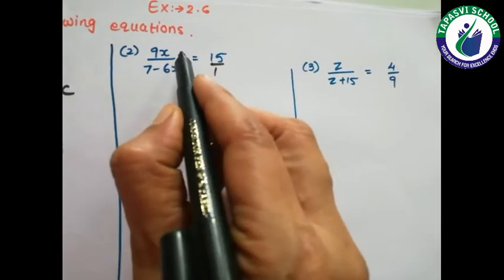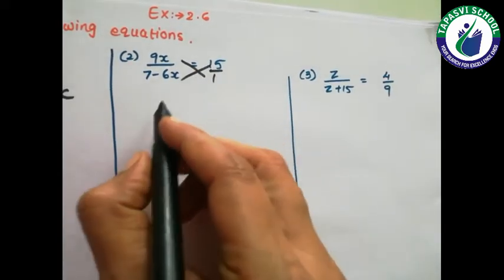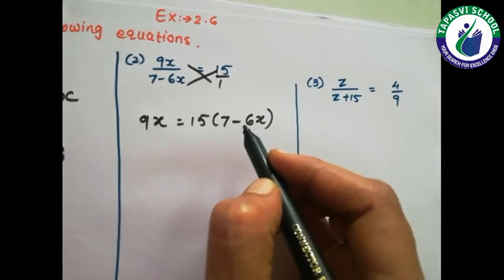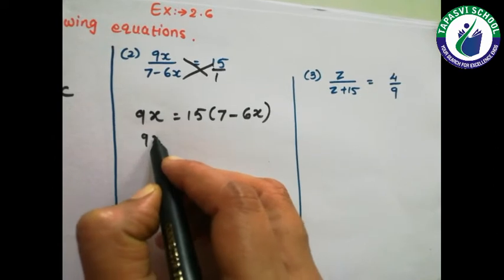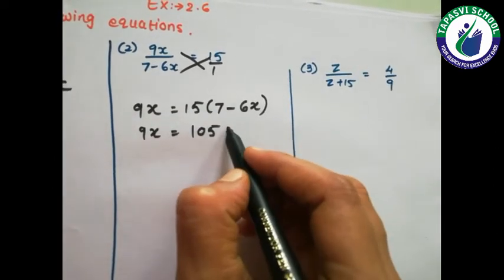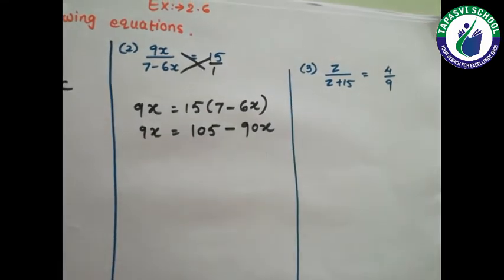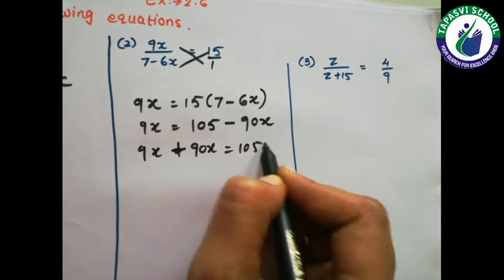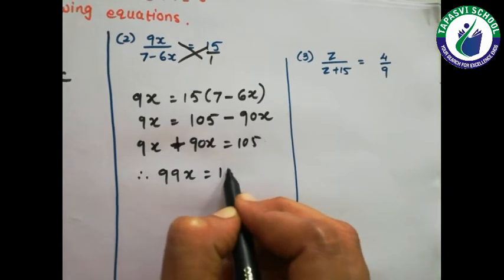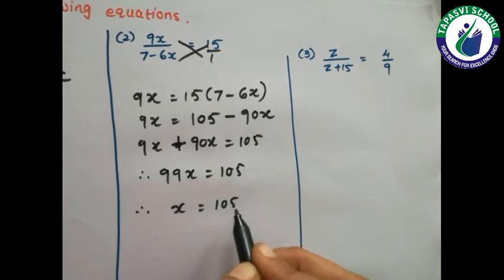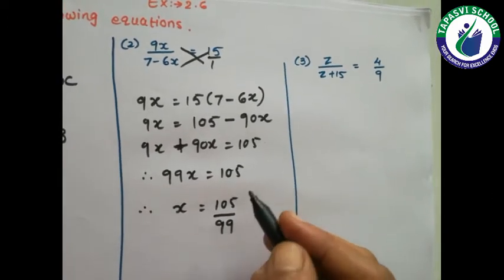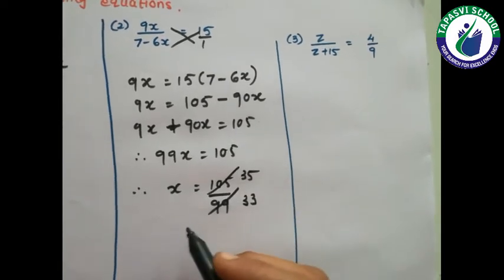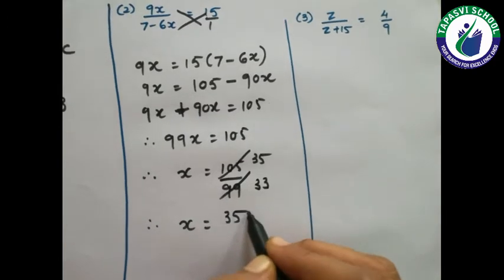Now same way here also we will go with the cross multiplication method. 1 into (9x + 15) equals 7 into (minus 6x). So 9x + 15, 7 fives are 105 plus, minus minus: 15 sixes are 90x. Now 9x, and 90x comes to this side: 9x + 90x equals 105, so 99x equals 105. Therefore x equals 105 upon 99. Simplifying: 35 threes are 105, 33 threes are 99, so the value of x is 35 upon 33.